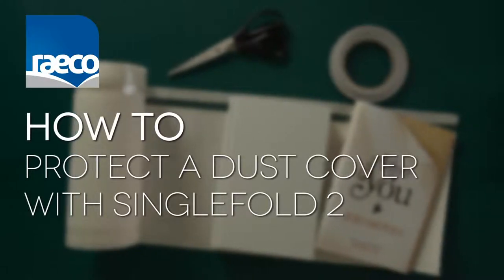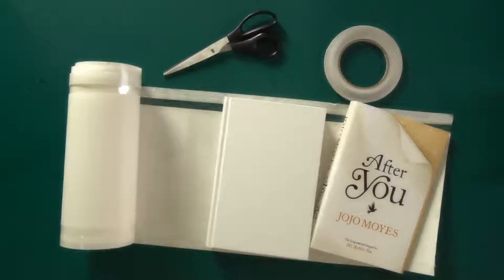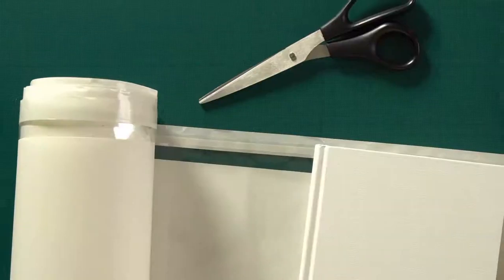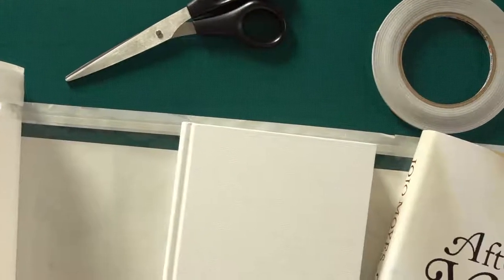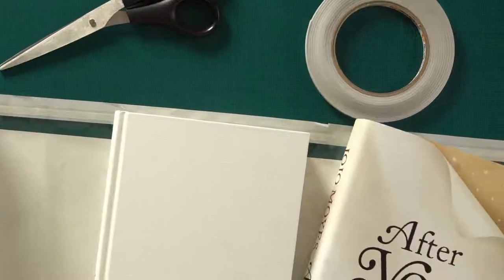How to protect a dust cover with Single Fold 2. The difference between Single Fold Original and Single Fold 2 is that Single Fold 2 has an adhesive strip along the top of the product.